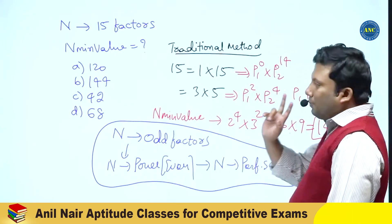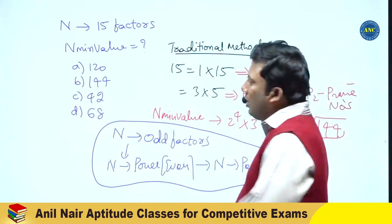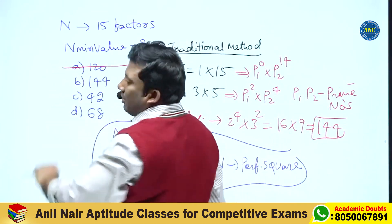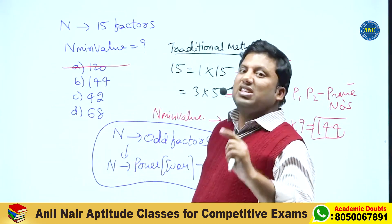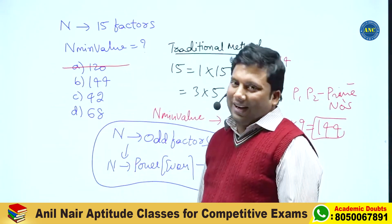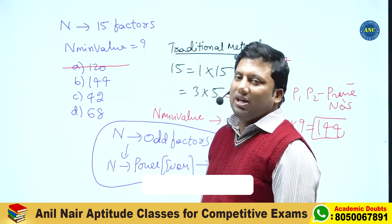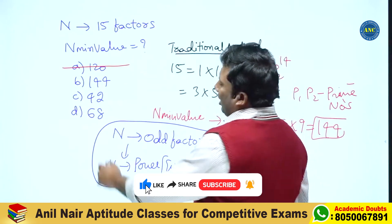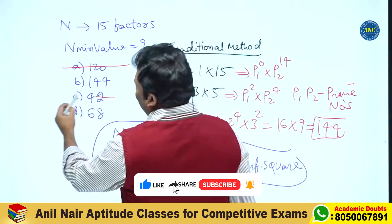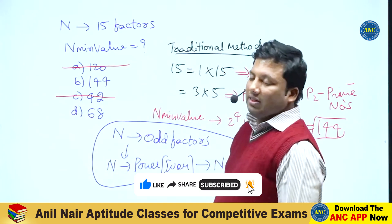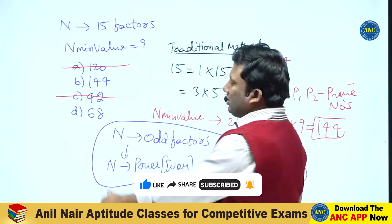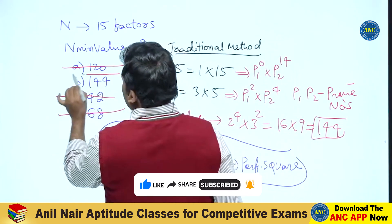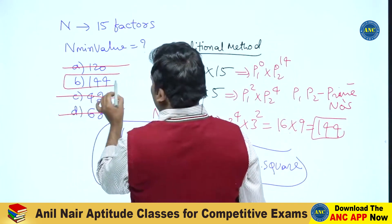The answer options are poor. 120 — its digital sum is 3. If a number is a perfect square, it should have digital sum 1, 4, 7, or 9. A perfect square never ends with 2, 3, 7, or 8. The only option that works is 144.